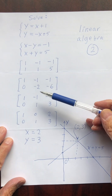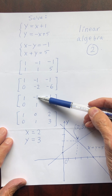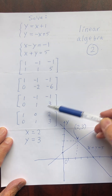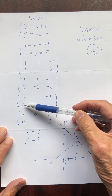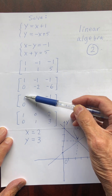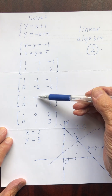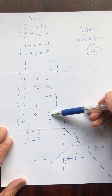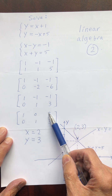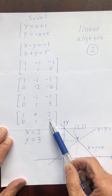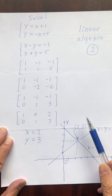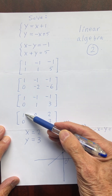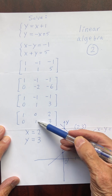Next, I can make the negative 1 in row 1 into a 0 by adding the second row to the first row. So: 1 plus 0 is 1, negative 1 plus 1 is 0, negative 1 plus 3 is 2. So I have 1, 0, 2 and 0, 1, 3. This is the reduced row echelon form. Therefore, x equals 2 and y equals 3.